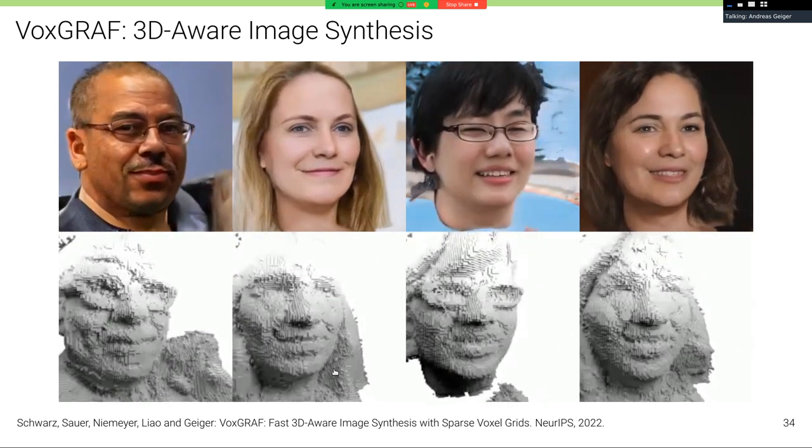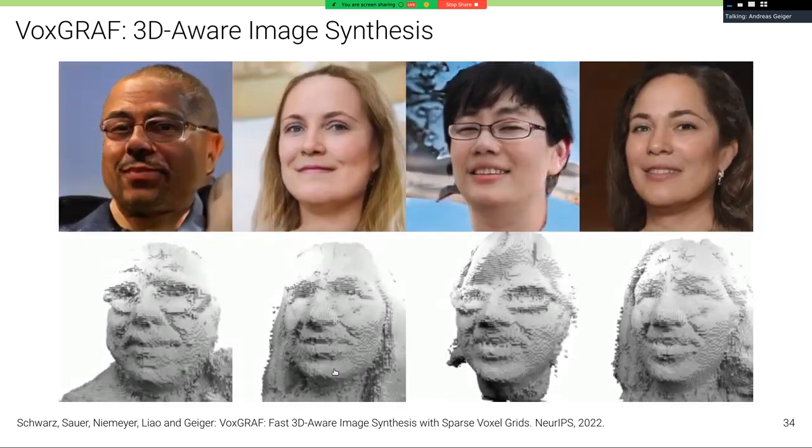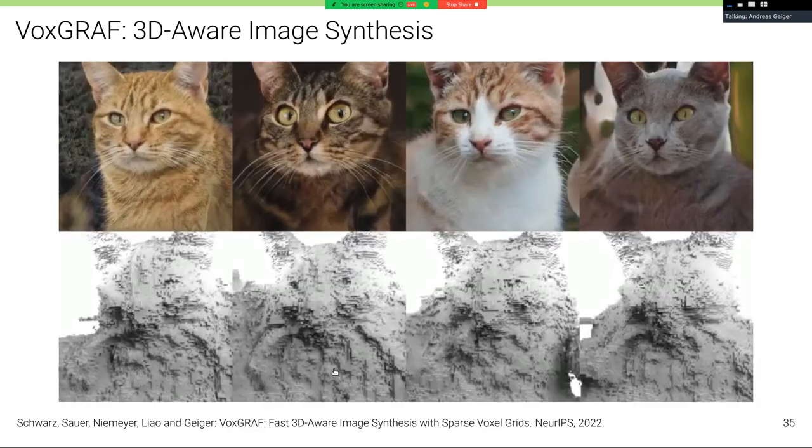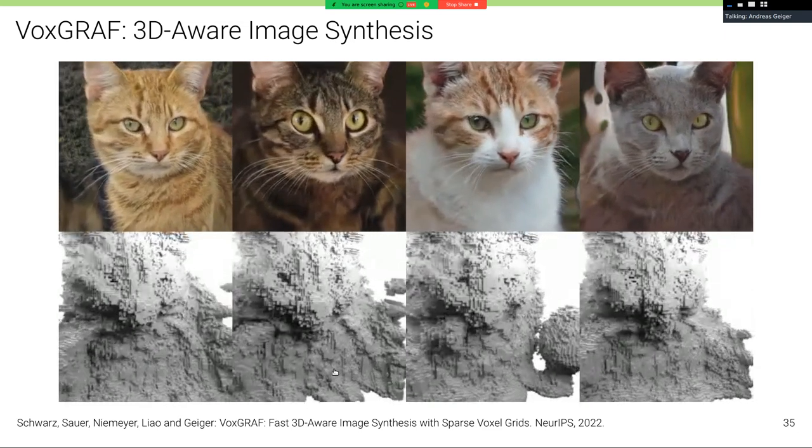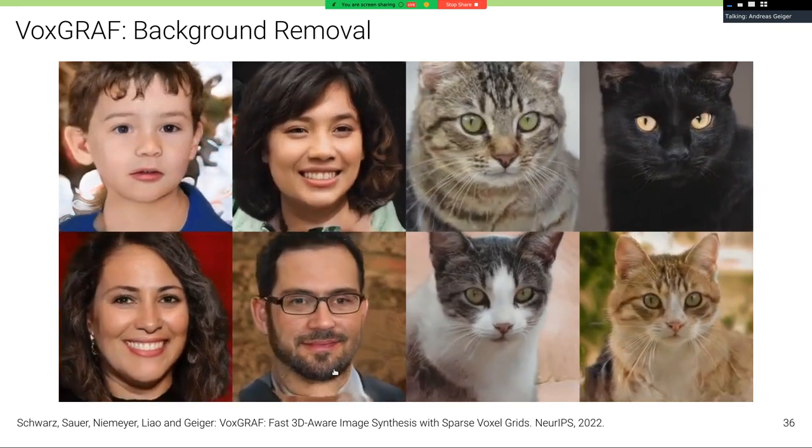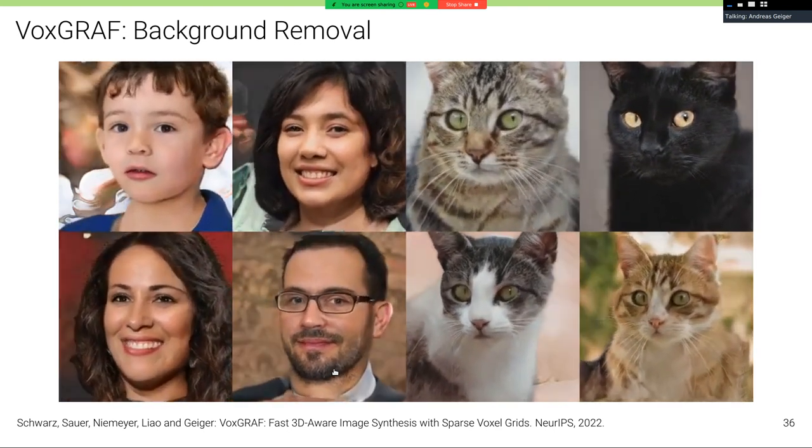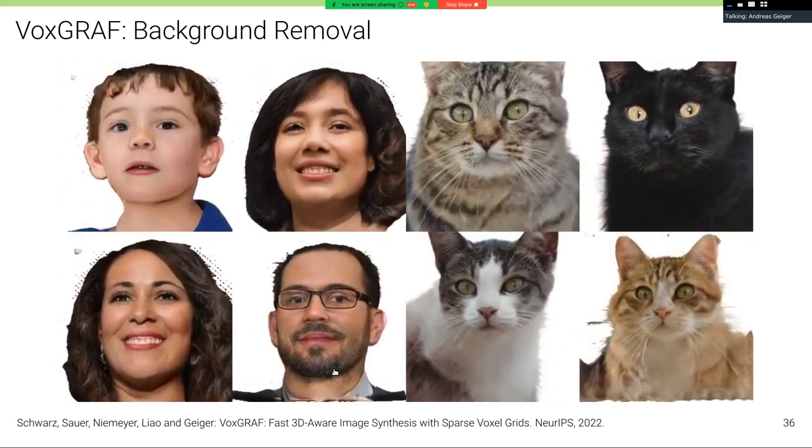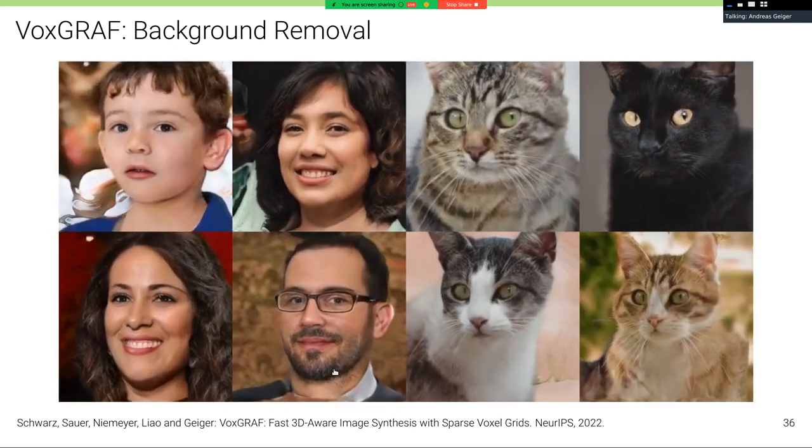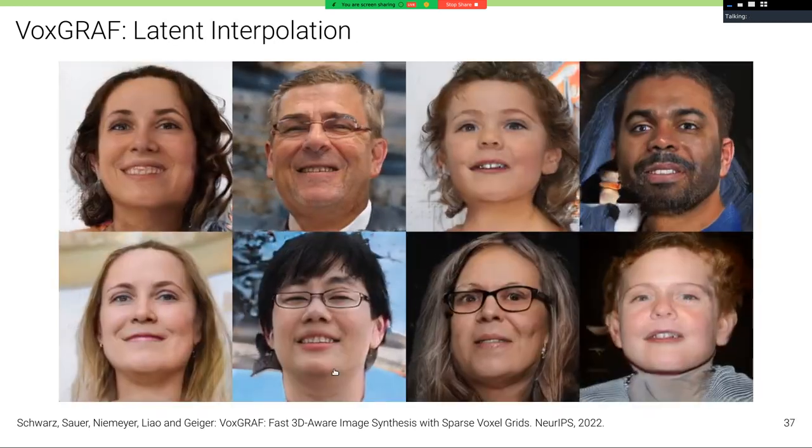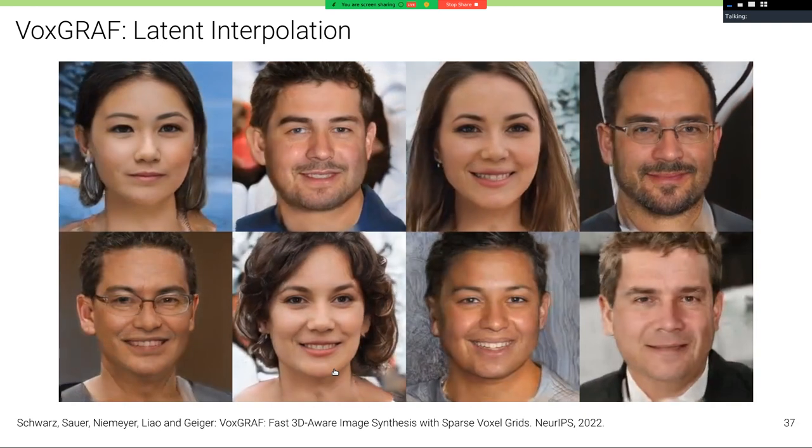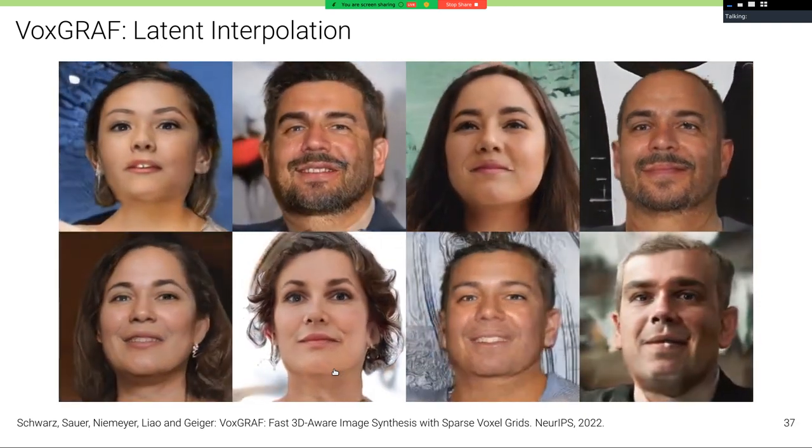Here are some more results of our method. At the bottom you can see the 3D voxel grid which was automatically constructed by our method, and on the top the rendered image corresponding to that. Works for faces. It works for cats as well and also for other objects. Here we can see how our model automatically learns to disentangle the foreground from the background. At inference time, we can then remove the background simply by ignoring it when rendering it. Here are some results on latent space interpolation, where you can see how the object identity slowly transitions between different people.